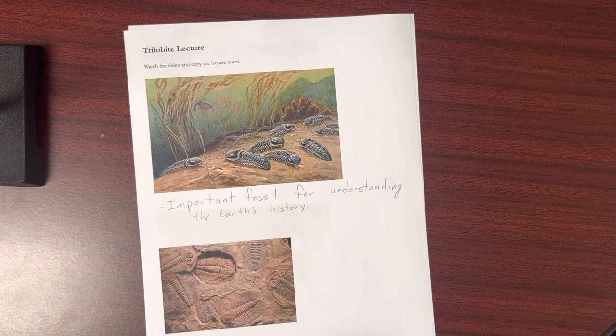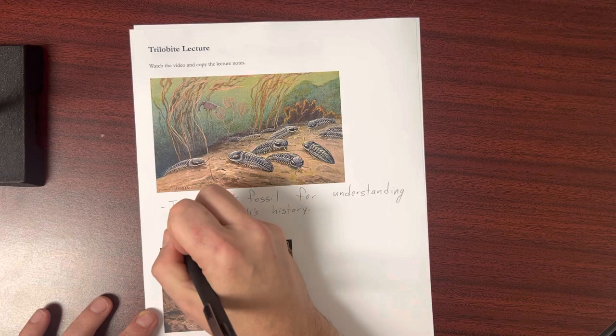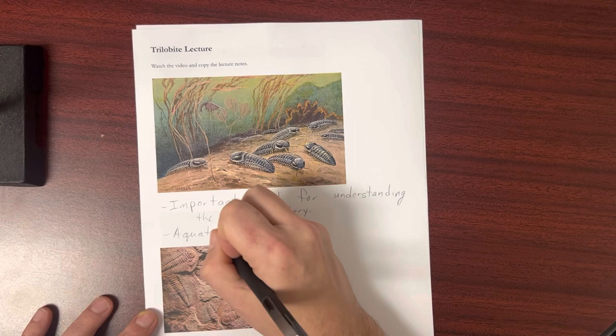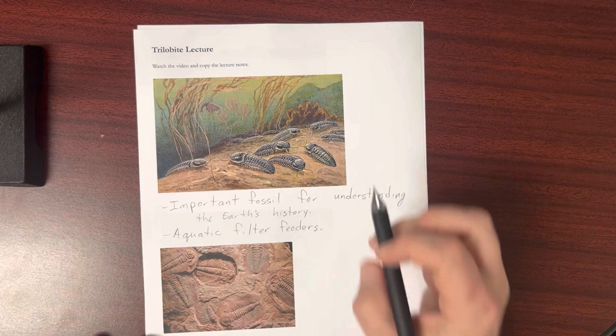But trilobites were these creatures here that you see in this image that mainly walked across the ocean floor. So they were underwater. They were aquatic. And for the most part, they were filter feeders. They would go through the sediment and the mud and filter out any bits of food that they might be able to digest.